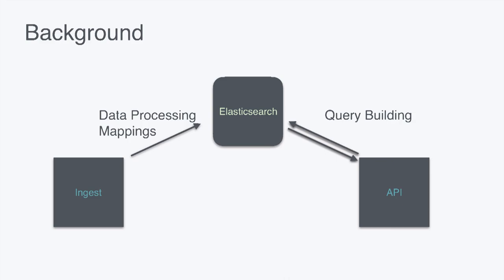Here's our super detailed architecture. There are two main components that we write, working around Elasticsearch. We have an ingest component where we take content from Scoop, which is the internal CMS at the New York Times. We also have an API component where we take user queries and translate that into an Elasticsearch query — pretty standard setup.